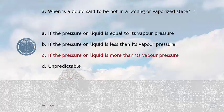When is a liquid set to be in a boiling or vaporized state? Options: if the pressure on liquid is equal to its vapor pressure, less than its vapor pressure, more than its vapor pressure, or unpredictable. The answer is if the pressure on liquid is more than its vapor pressure, then that liquid is set to be in vaporized state.